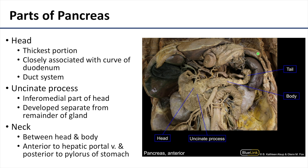Let's better understand the parts of the pancreas. The head fits right into the C-shaped portion of the duodenum. This is the thickest portion of the pancreas, and it's on its way to opening into the descending part of the duodenum. The bile duct lies in a groove on the posterior superior surface of the head and is embedded within the parenchyma of the pancreas. The uncinate process, a close neighbor of the duodenum, is a projection of the inferior part of the head that develops separately in utero, giving it a slightly different appearance.